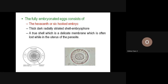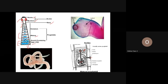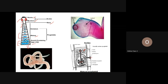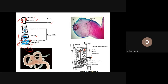Once gravid proglottids develop, depending on the parasite, eggs may be released continuously through the genital pore — this is known as pseudo-apolysis. Sometimes the gravid proglottids disintegrate and release eggs — this is known as apolysis.